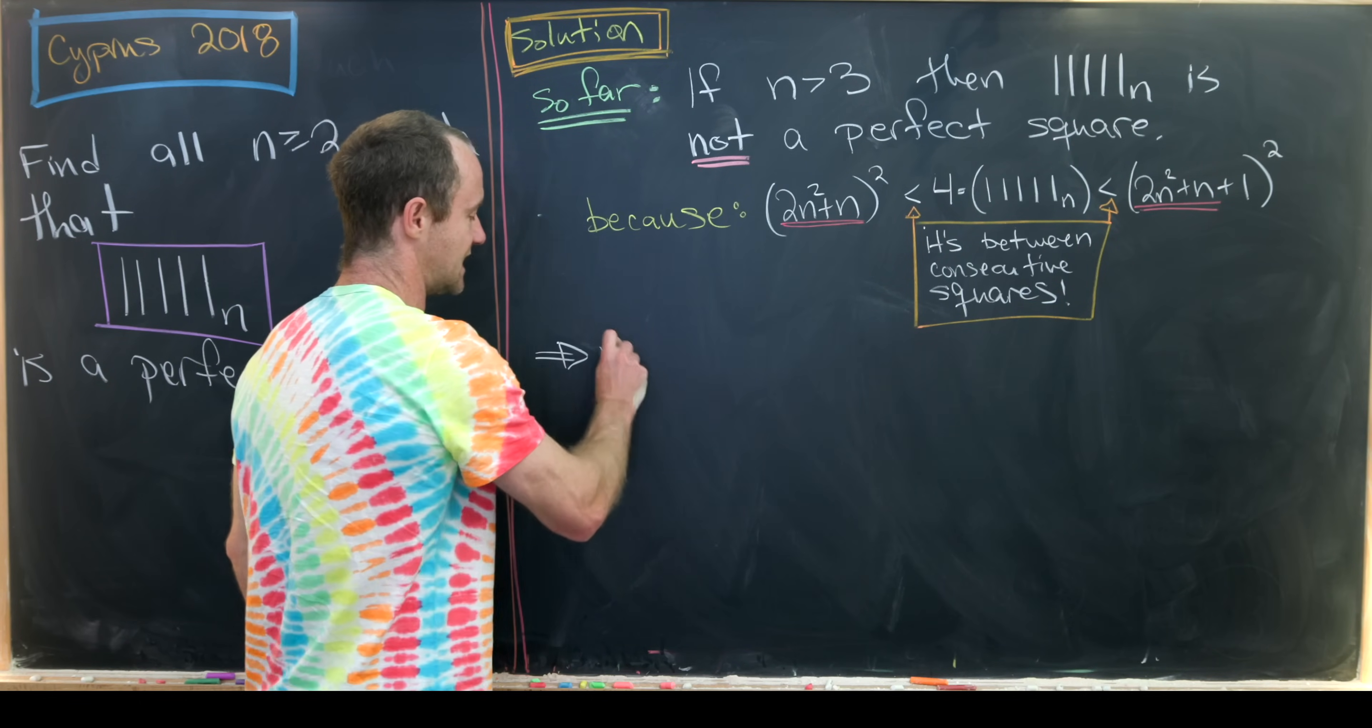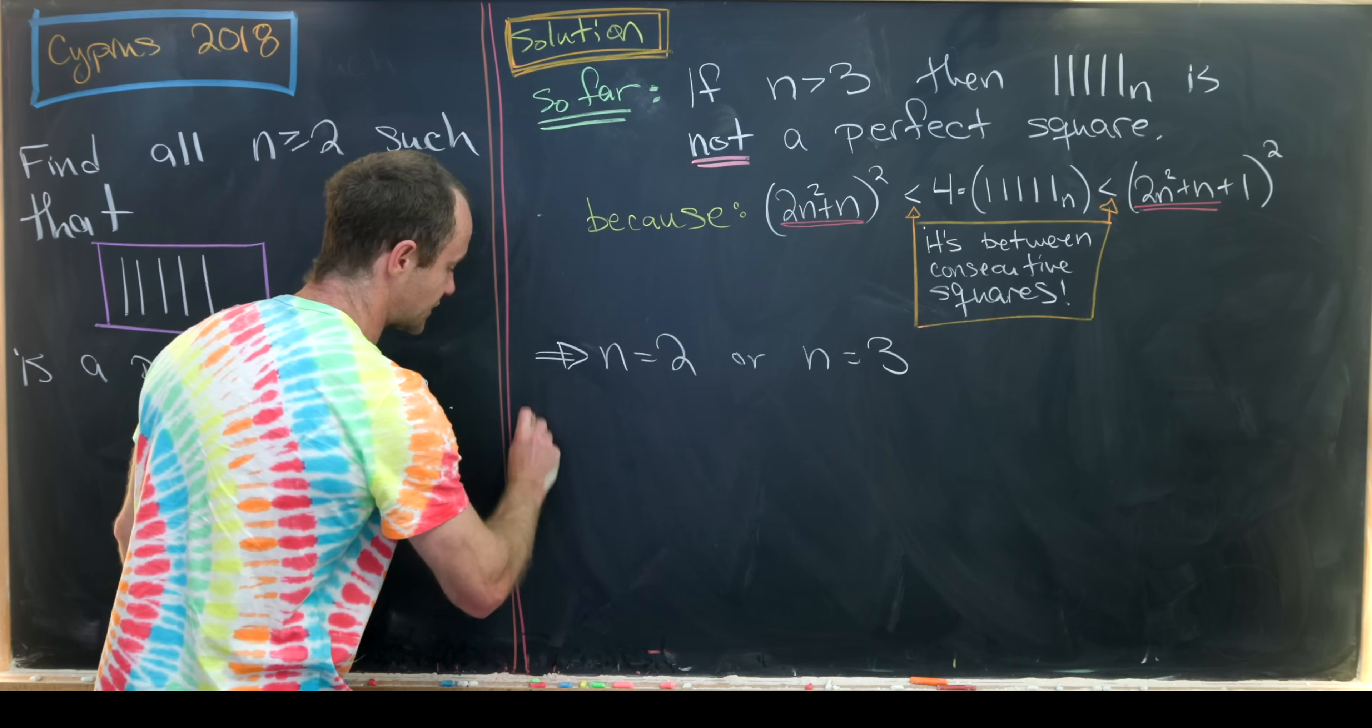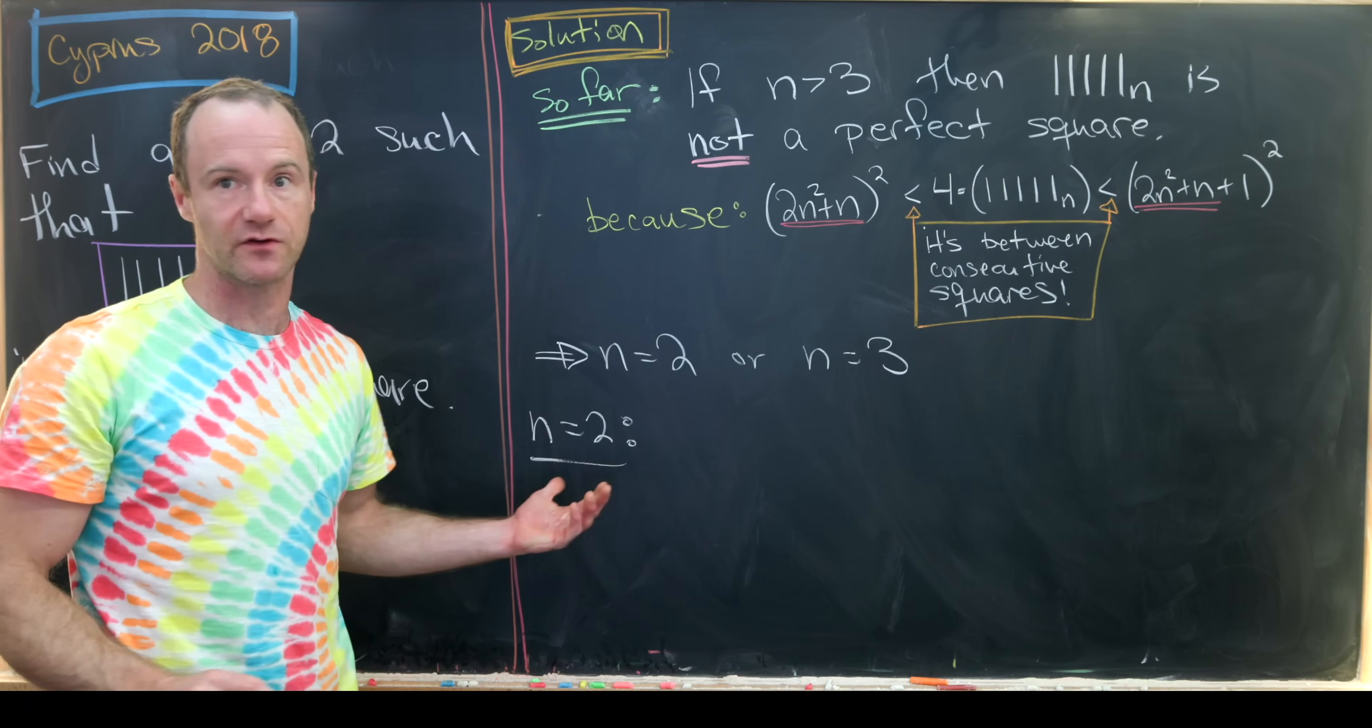Okay, so that means that n must be equal to 2 or n must be equal to 3. And so let's check each of those cases one at a time to see if either of them give us perfect squares.